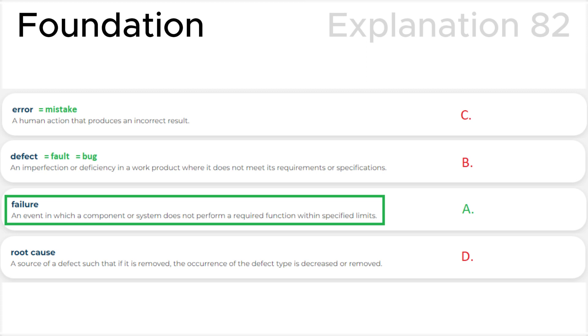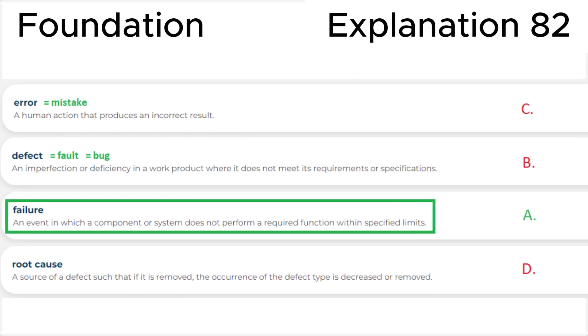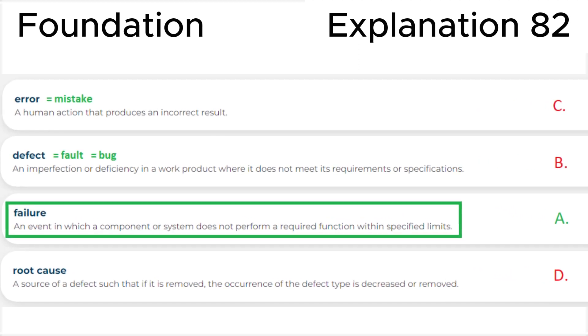Explanation: First, let's look at the definitions in the ISTQB glossary. Failure is an event in which a component or system does not perform a required function within specified limits. This definition is fully consistent with the correct answer A.